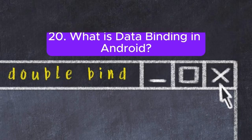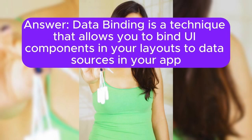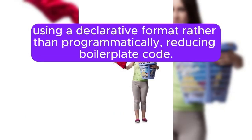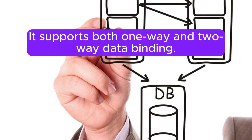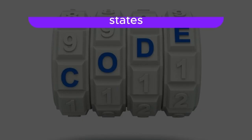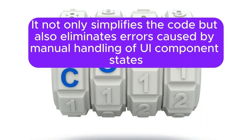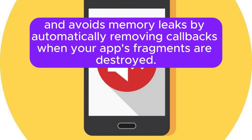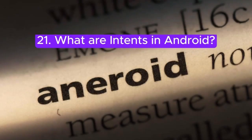Question 20: What is data binding in Android? Data binding is a technique that allows you to bind UI components in your layouts to data sources in your app using a declarative format rather than programmatically, reducing boilerplate code. It supports both one-way and two-way data binding, simplifies code, eliminates errors caused by manual handling of UI component states, and avoids memory leaks by automatically removing callbacks when your app's fragments are destroyed.